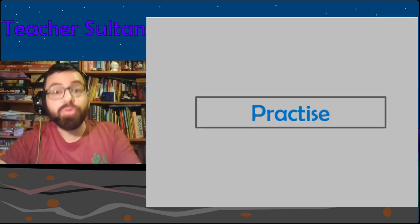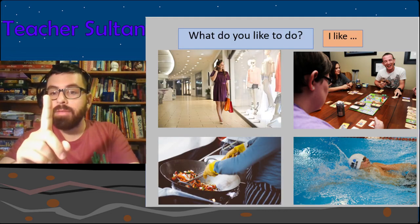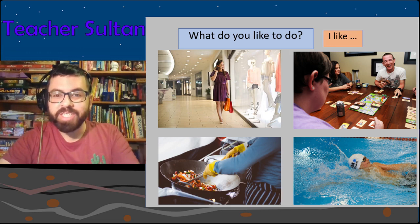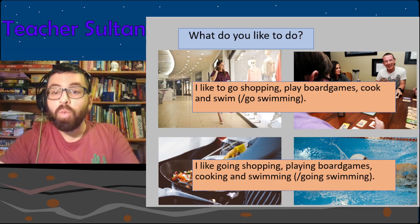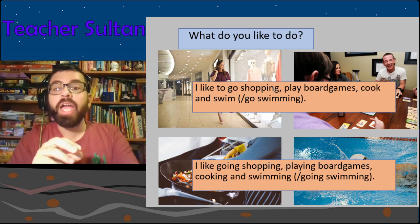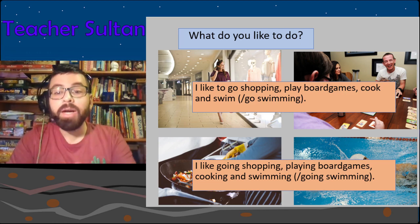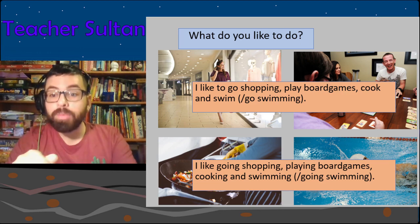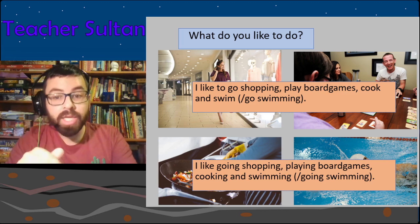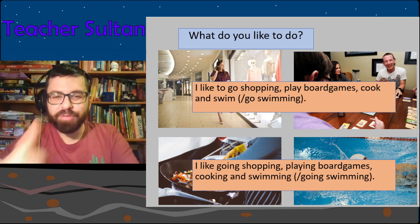Let's do some more practice. Here I want you to make one sentence about these four pictures — pause the video and try. The answers: 'I like to go shopping, play board games, cook and swim.' Or in -ing form: 'I like going shopping, playing board games, cooking and swimming.' Both are fine.